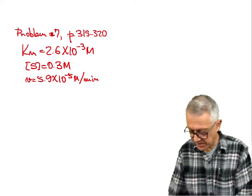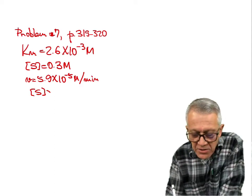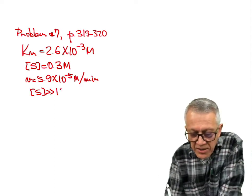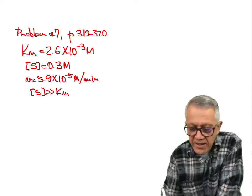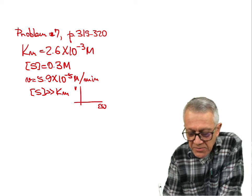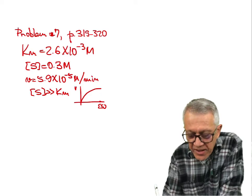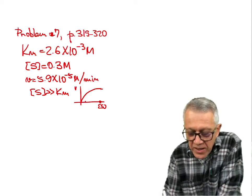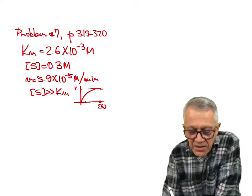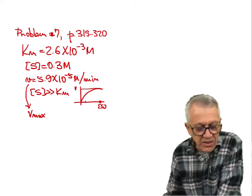The first thing that comes to mind is that this substrate concentration is much higher than the Km. So we are in a situation on the hyperbolic curve where, at very high substrate concentration compared to Km, we are already in zero-order. Basically, the velocity we are given is the Vmax.